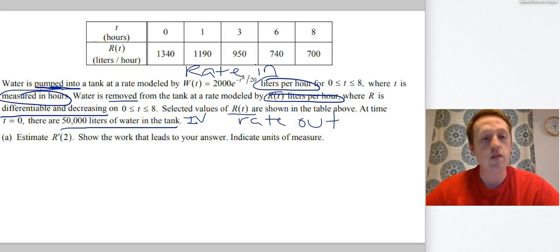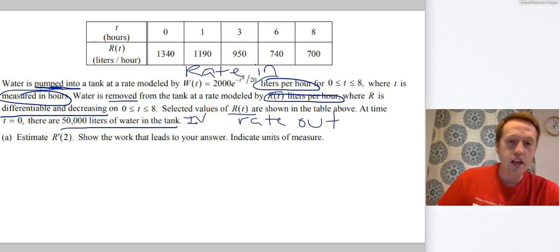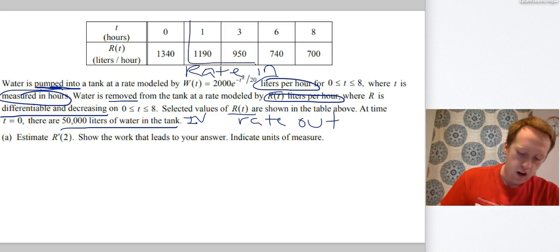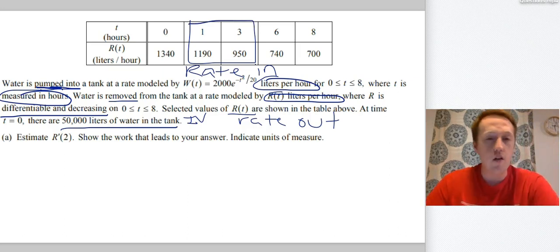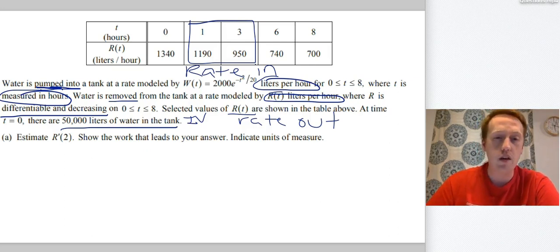Okay, so first thing I'm going to do is estimate R prime of 2, show the work that leads to your answer and indicate units of measured. So if I want to estimate a derivative value, what I'm going to do is I'm going to find the smallest interval on this table of T that contains T equals 2. And that's going to be right here. That is the smallest interval of T values that contains T equals 2.